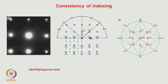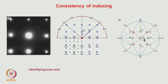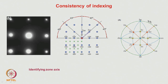So far we have talked about indexing one particular pattern. Consistency is required in indexing — as mentioned, after analysis this pattern is indexed with spots such as 000, 200, and so on. The stereographic projection for a 001 zone axis in a cubic system shows that all spots lying on the great circle corresponding to 001 are 90 degrees away from it, consistent with our indexing.